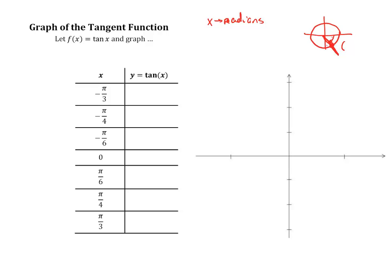It's negative 60 degrees, so it goes right 1 half and goes down negative square root of 3 over 2. So this value, if you plug in negative π over 3 into tangent, is going to be negative square root of 3 over 2 divided by 1 half, which gives me negative square root of 3 when you invert and multiply.